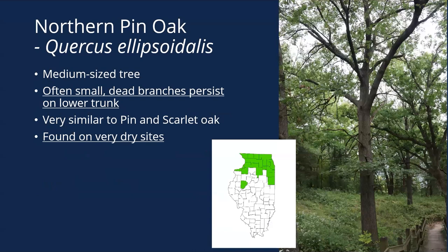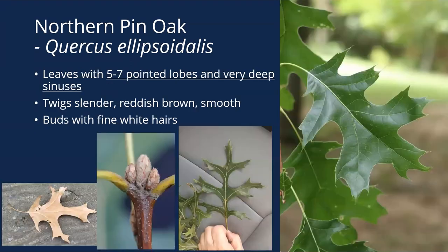The last of our uncommon upland red oaks would be northern pin oak, also called hills oak — same thing, just two different names. Some people thought it was basically the same species as scarlet oak. It looks a lot like a pin oak but grows in the drier uplands. It often holds its dead small branches on the lower trunk, just like scarlet oak. It's found on very dry sites but only in northern Illinois, not southern Illinois — whereas scarlet oak is found in both northern and southern Illinois. Five to seven pointed lobes with deep sinuses, buds with fine white hairs on them.